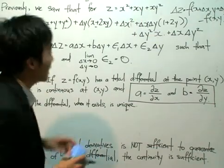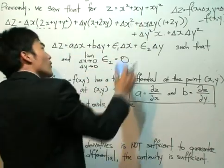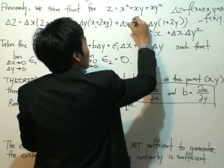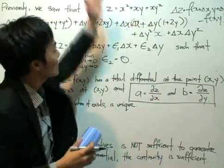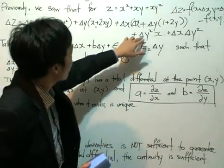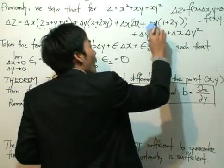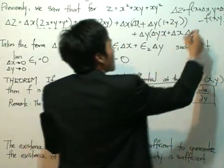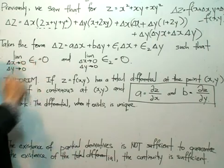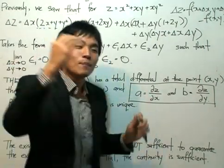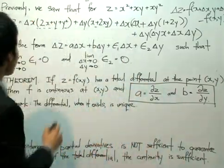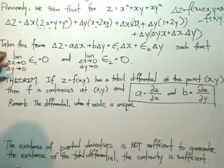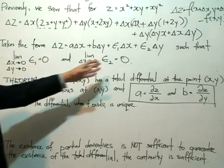I can rearrange that to a very nice form. I'll factor out delta x from the delta x squared term, giving delta x multiplied by the bracket containing delta y and delta x. Similarly, I can factor out delta y. This rearrangement magically takes the canonical form the function needs to have a total differential: delta z equals a·delta x plus b·delta y plus epsilon1·delta x plus epsilon2·delta y, where the limit of epsilon1 and epsilon2 as delta x and delta y approach zero equals zero.